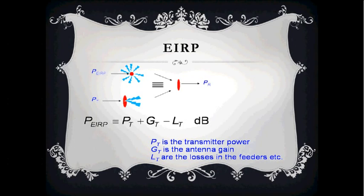EIRP is the amount of power that would have to be radiated by an isotropic antenna to produce the equivalent power density observed from the actual antenna in a specific direction. The EIRP is still a function of direction. To calculate EIRP: P_EIRP = transmitting power + antenna gain − losses in the feeder. All these parameters are calculated in dBs.